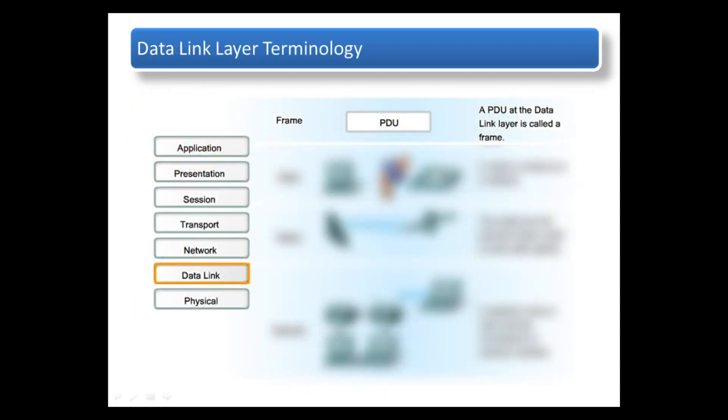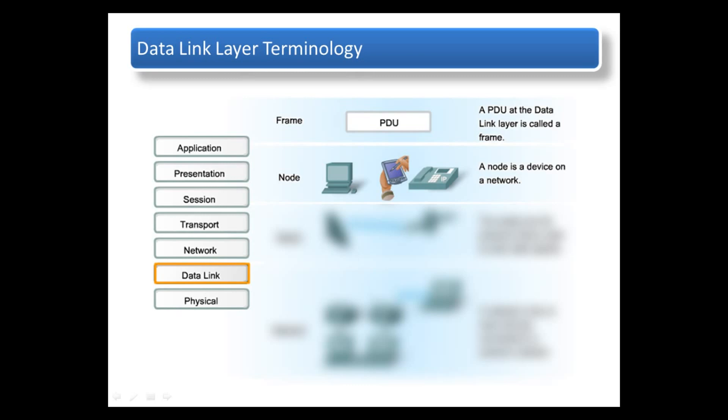As with each of the OSI layers, the data link layer has its own terminology and PDU. Regardless of the protocols used by this layer, these protocols will produce a frame. Frames are what nodes — that is, a device on a network — will use to carry network layer packets across the common medium. The media are the physical means used to carry data signals.